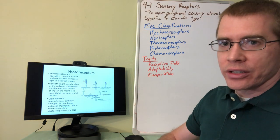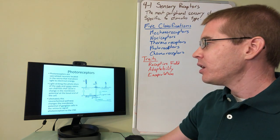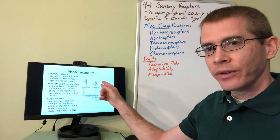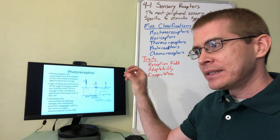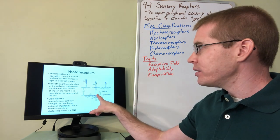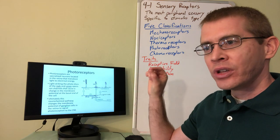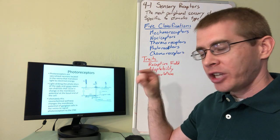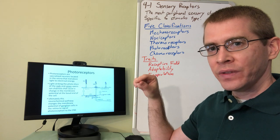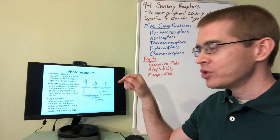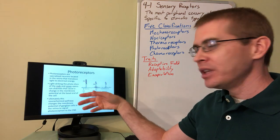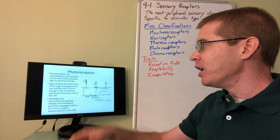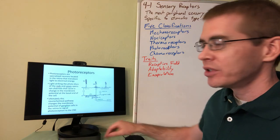Photoreceptors — the rods and cones in the eye — respond to photons of light. There are very specific enzymes within the rods and cones that respond to certain wavelengths of light. These enzymes change their conformation when they receive the energy of the photon, resulting in a cascade that leads to firing of these neurons in an action potential.